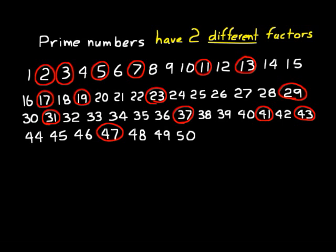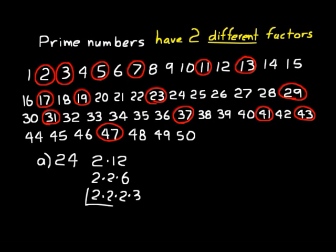Let's do some practice with prime number factorization. For 24: to break it into its prime number factors, you could start with 2 times 12, then 12 is 2 times 6, and 6 is 2 times 3. So 24 breaks down to 2 times 2 times 2 times 3 — those are its prime number factors.